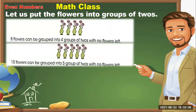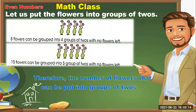Ten flowers can be grouped into five groups of twos with no flowers left. Therefore, the number of flowers that can be put into groups of twos with no flowers left are two, four, six, eight, and ten.